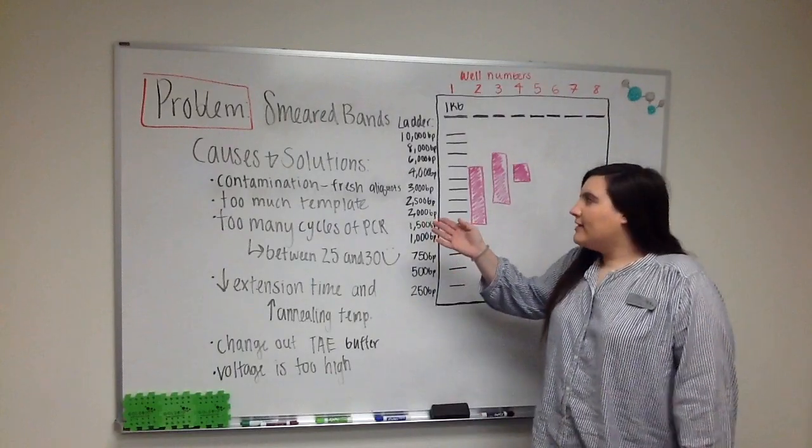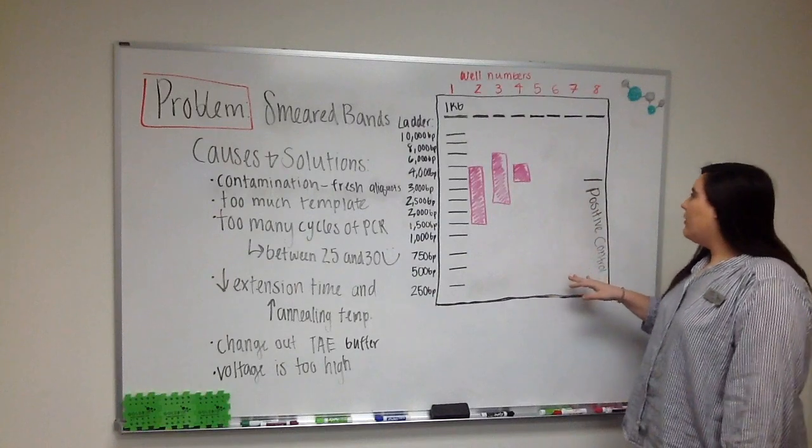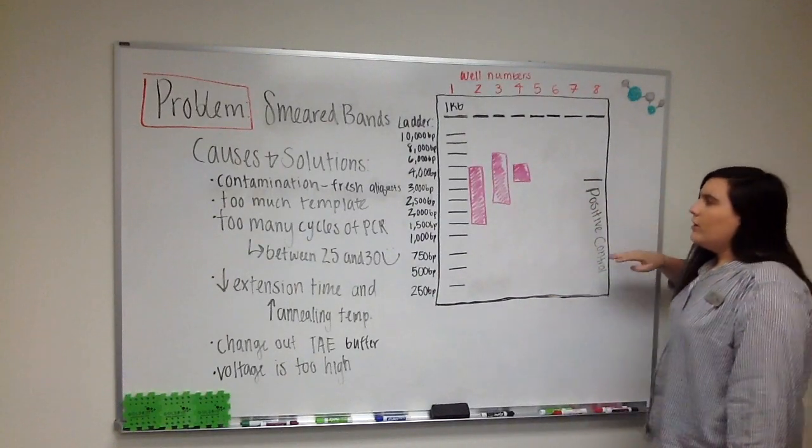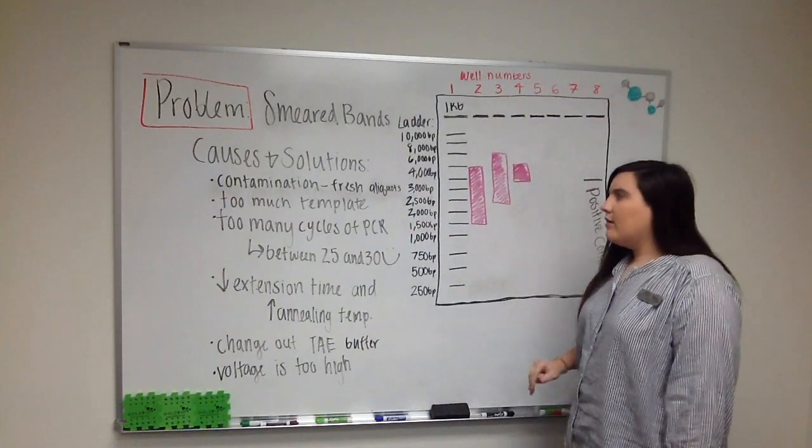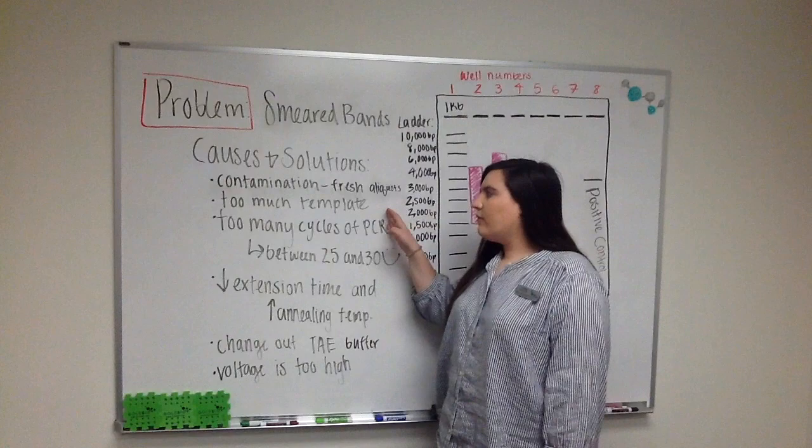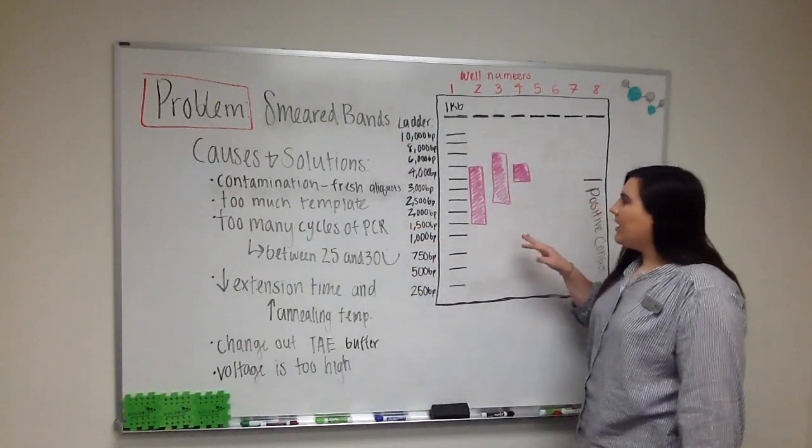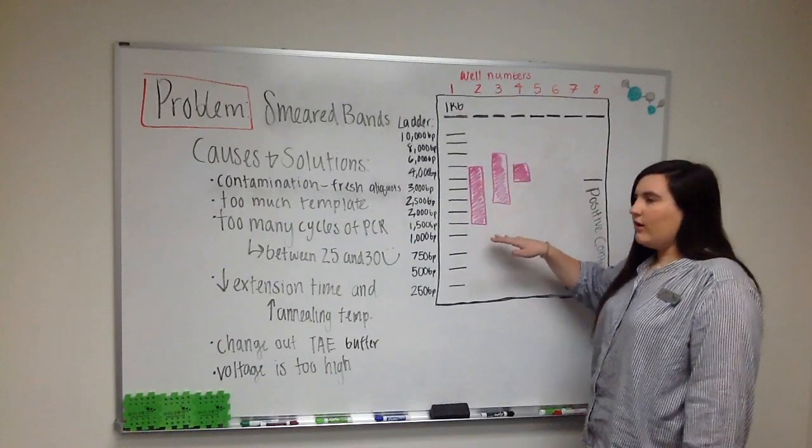The final problem we're going to be looking at today is smeared bands. How this might appear on the gel is instead of getting your nice tight band that you were looking for, you actually got some smearing down the gel during gel electrophoresis. Some common causes and solutions for this is that you might have had a contaminant that was degrading your DNA causing different length fragments which can look like this smearing effect down the gel.